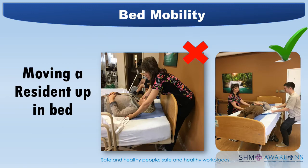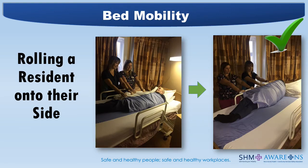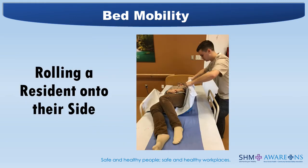When moving a resident up in bed, do not use soaker pads or incontinence pads to boost someone up. Proper use of the slider sheet is shown on the right — all slider sheets require a person on either side of the resident, and never pull from the top of the bed as shown on the left. When rolling a resident onto their side, common errors include the bed rail being up, arms out, doing all the work, lifting rather than sliding, and not bringing the resident close before rolling. The wrist should be in the supinated palms-up position, not the prone palms-down position.